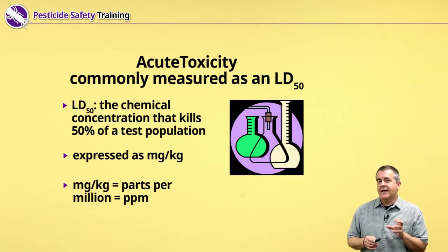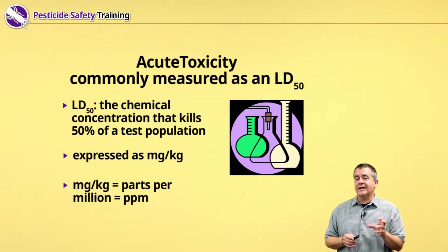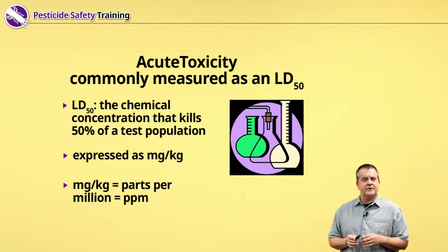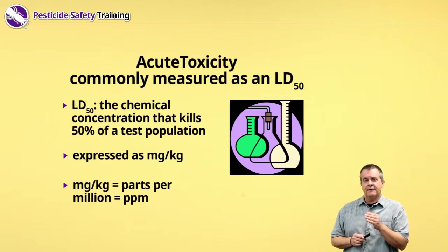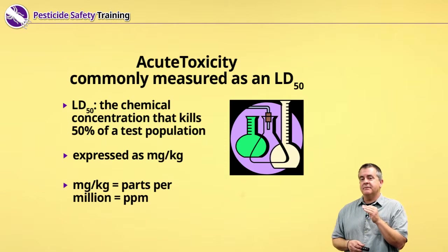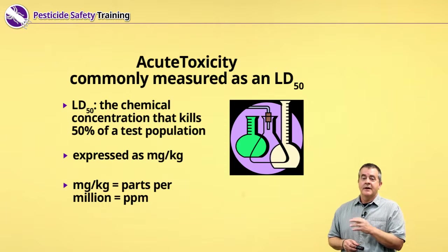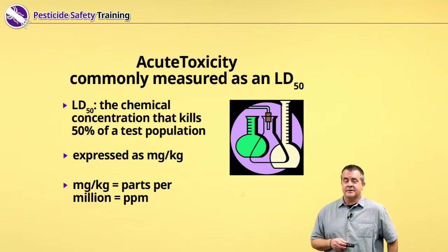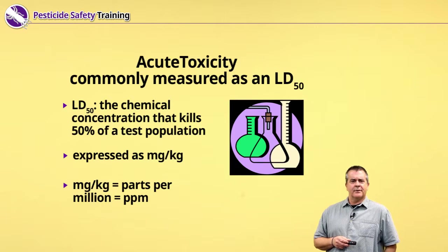Here's a simple definition. The LD50 is the concentration of the pesticide in a laboratory test — think of rats in cages — that will kill 50% of the test organism. The LD50 value is expressed in milligrams per kilogram. Since this is the United States, most people, except for scientists, are not that conversant with these terms: milligram and kilogram.